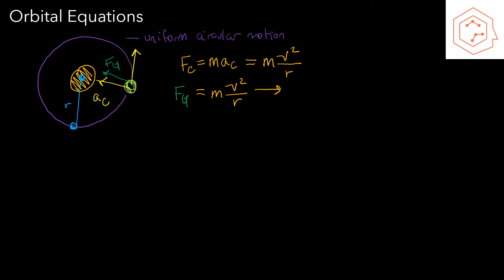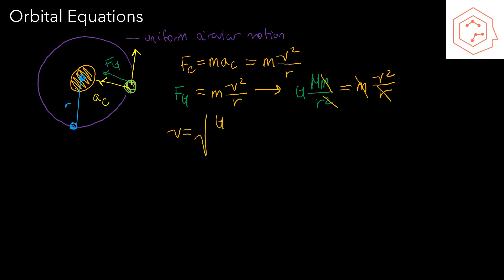We can rewrite this so that G times the inner mass times the orbiting mass divided by R² equals the orbiting mass times its velocity squared divided by R. The orbiting mass cancels from both sides, one radius cancels, and we can isolate for velocity: V equals the square root of GM (the inner mass) divided by the radius of the orbit. That's the expression for orbital velocity.